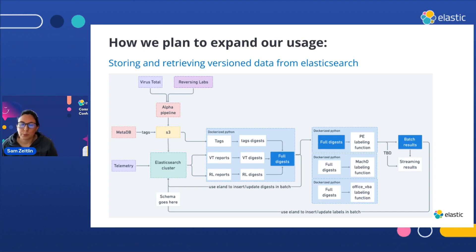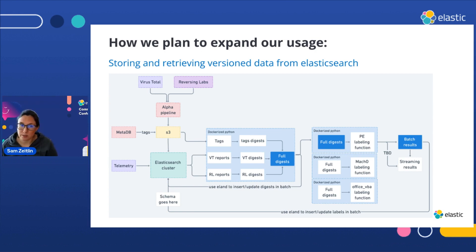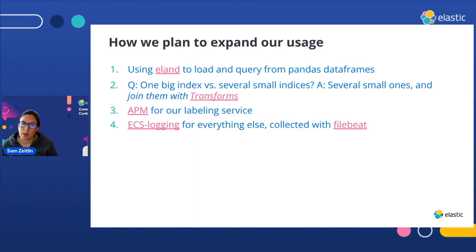As we're improving our model pipelines and productionizing more and more of this, we're looking at how we can have Elasticsearch essentially in the center of the whole process. We've got our third-party data coming in, getting processed by the data engineering team. Our tags have now all been moved into S3, and we have telemetry coming in. We're going to put everything in an Elasticsearch cluster. We're planning to use Eland, which is a Python library that makes it easy to interoperate with Pandas, which is another Python library we use a lot in data science.